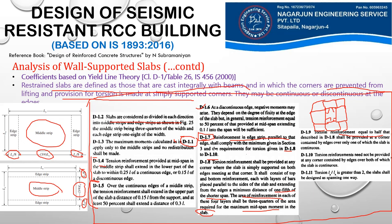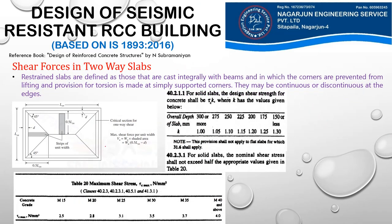Annex D of IS 456 mainly discusses reinforcement detailing and torsion reinforcement in slabs. We will revisit these codal provisions during the actual design of our slab in the next lecture when they will be clearer. Up to now we have talked about bending moments in our slabs; now let us talk about shear forces in two-way slabs.